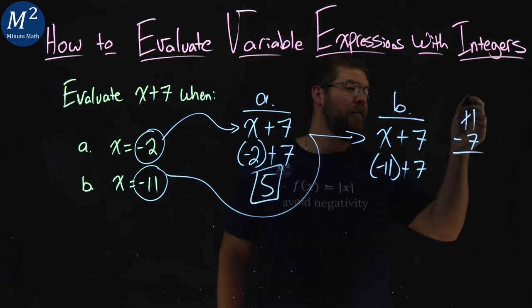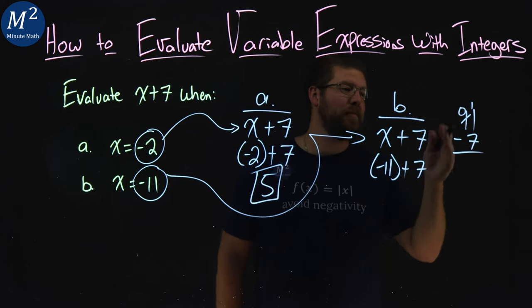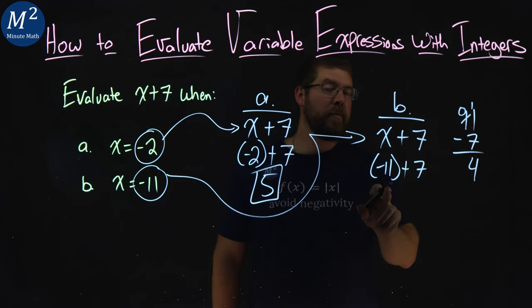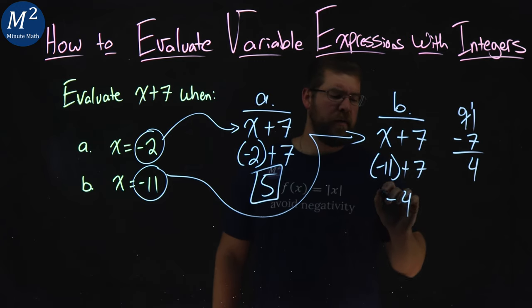1 minus 7 can't do. Cross off that 1, put it over here, and now you have 11. This becomes a 0. 11 minus 7 is 4. Remember, we said it was more negative. 11 was more negative than 7 was positive. So we have a negative 4 here.